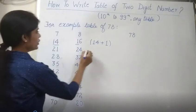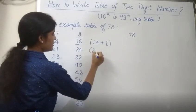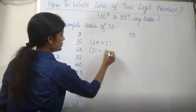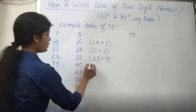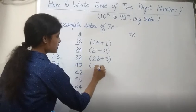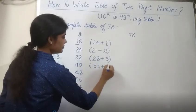Then we will do 21 plus 2, then 28 plus 3. Then we will do 35 plus 4.